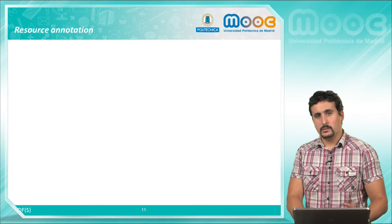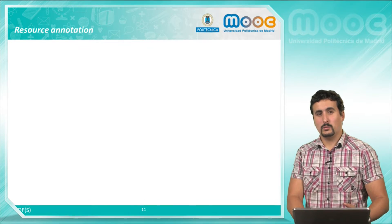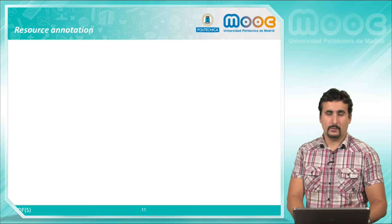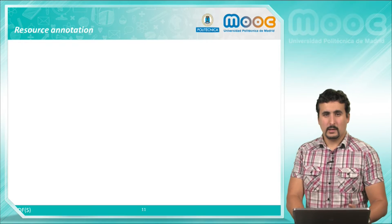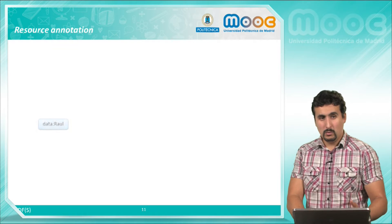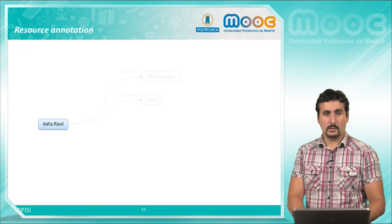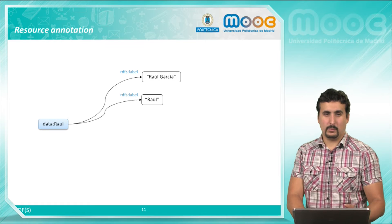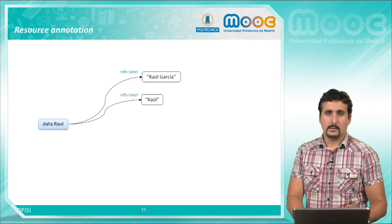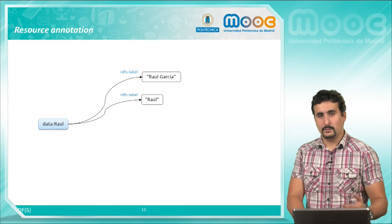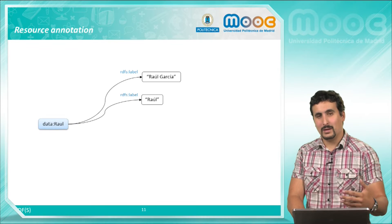With RDF-S we introduce a set of special properties that allow to document and describe our resources. For example we can annotate the resource Raul, which we have introduced before, with textual information. Using for example RDF-S label, with this property we can assign informative textual labels in different formats and languages.